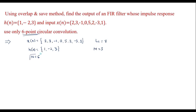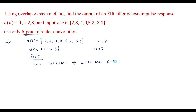We know that N is equal to L plus M minus 1. With the help of this we can calculate L, which is equal to N minus M plus 1, which is equal to 6 minus 3 plus 1, which is equal to 4. Therefore L is equal to 4.